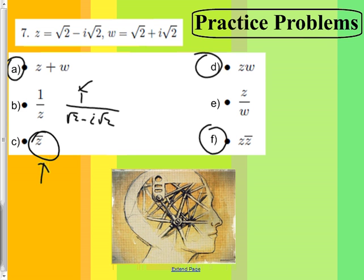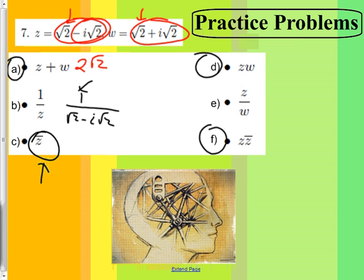For part A, you're just adding them together: the real parts add to give two root twos, and the imaginary parts are opposites of each other so they disappear. The answer is just two root two.